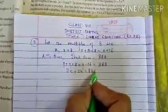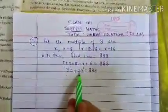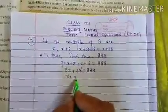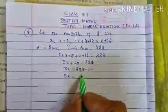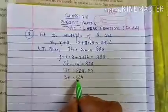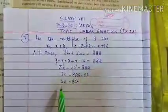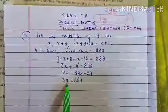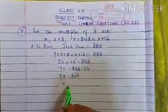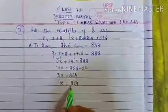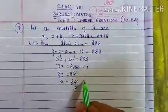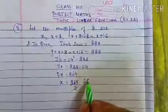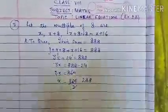You will get 3x plus 24 equals 888. Now transpose 24 on the other side, you will get 888 minus 24. So 3x equals 864. Again, 3 is multiplying here, so transpose it on the other side, you will get 864 divided by 3. Now divide it by 3, you will get 288.